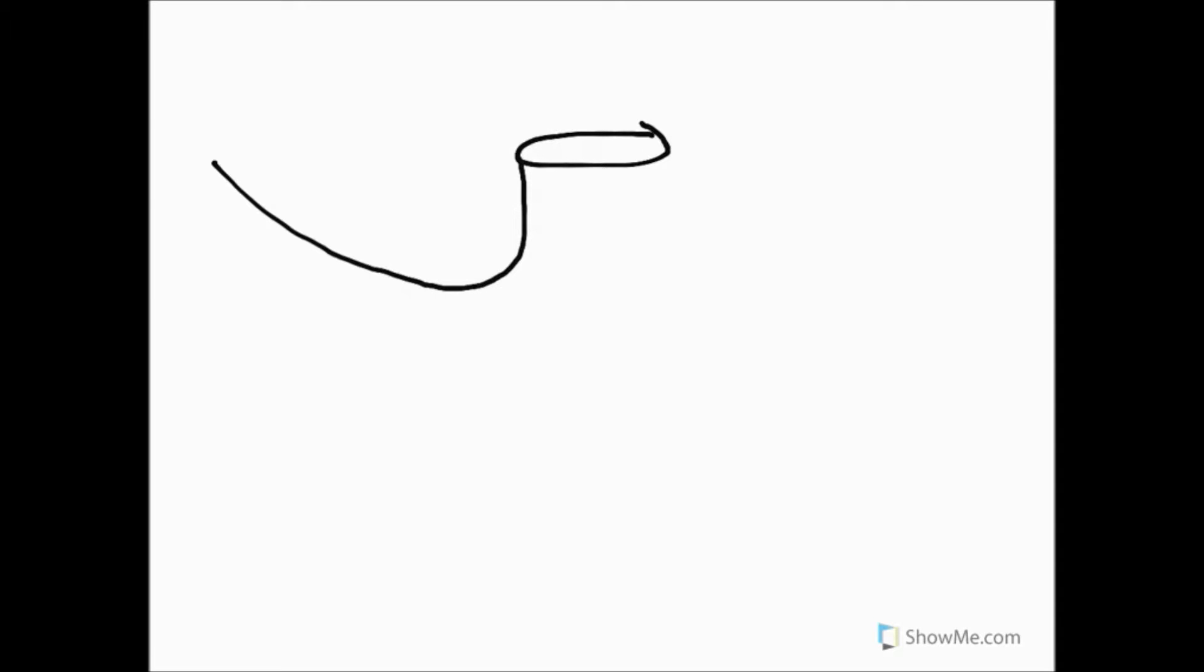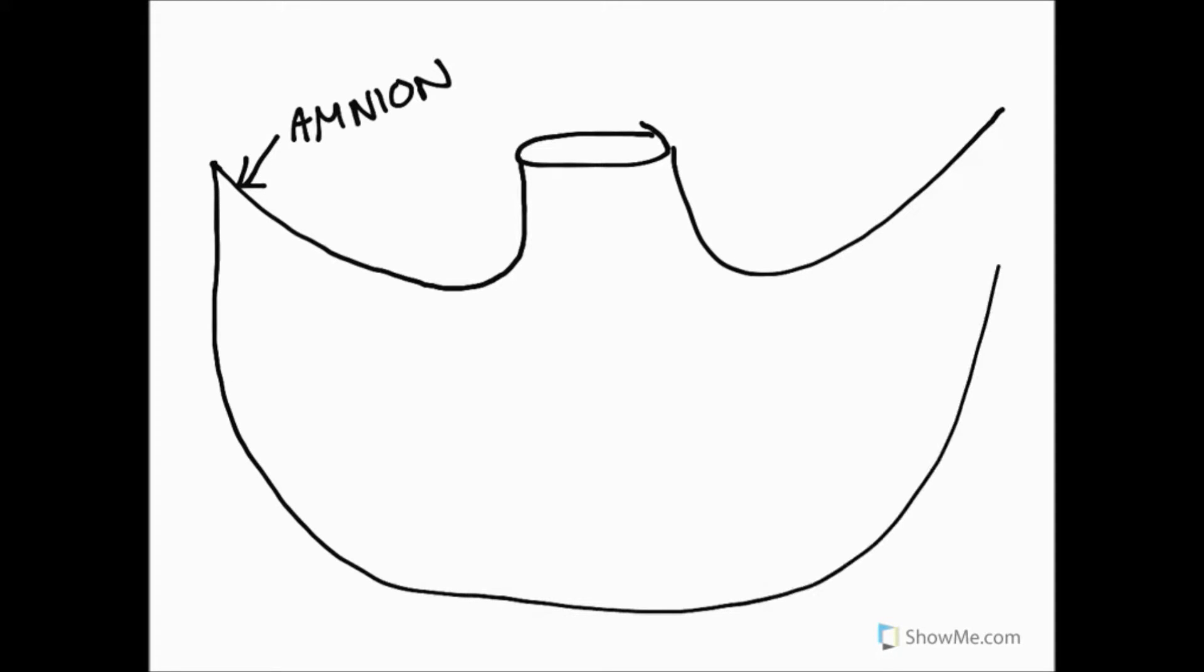So first of all, I'm going to draw the umbilical cord joining the placenta, nice and big, a little bit like that, and the layer here that is the amnion. What we need to do is we need to draw on the chorionic plate. In order to do that, we need to come all the way down here to a structure known as the decidua basalis and complete that.